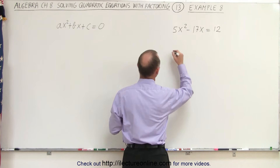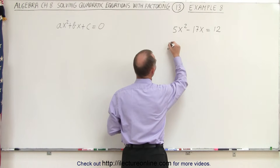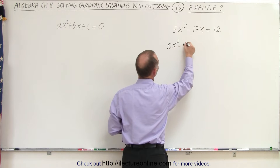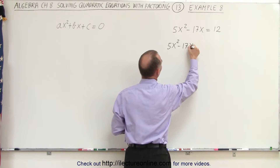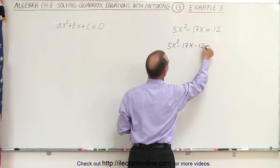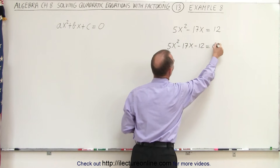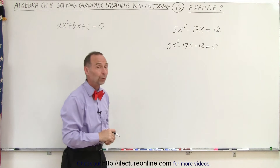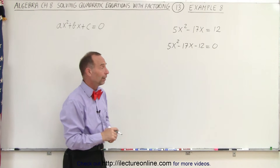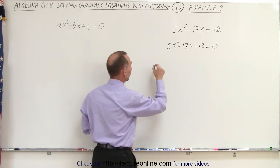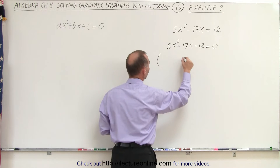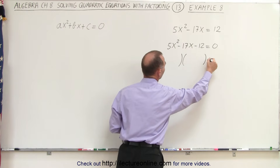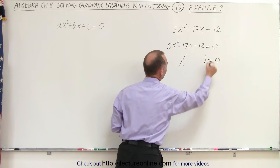So this would then look like 5x squared minus 17x minus 12 equals 0. And now we just have to find a way to factor that. It will look something like the product of two binomials equal to 0.